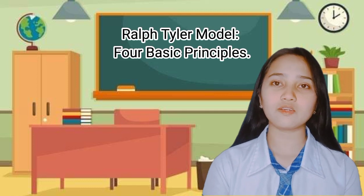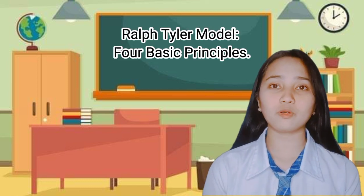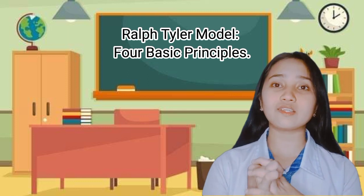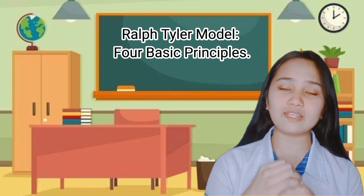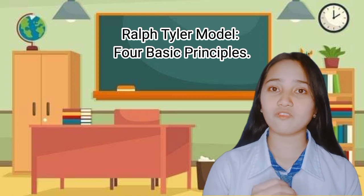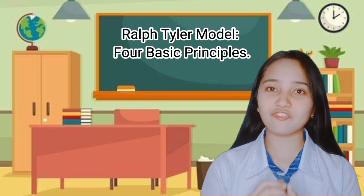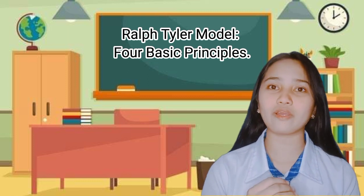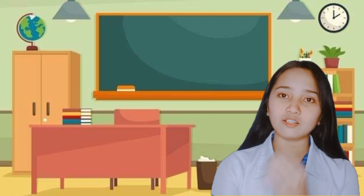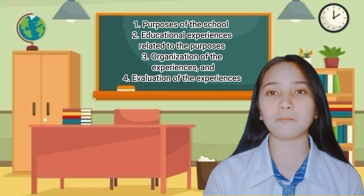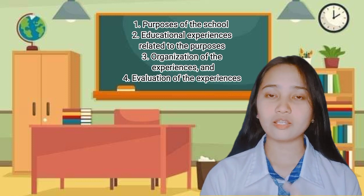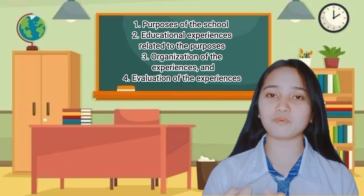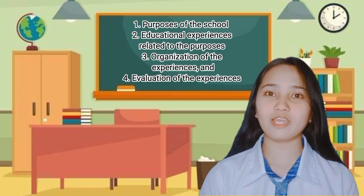Ralph Tyler's Model has four basic principles. Number one: what educational purposes should the school seek to attain? Number two: what educational experiences can be provided that are likely to attain these purposes? Number three: how can these educational experiences be effectively organized? And last: how can we determine whether these purposes are being attained or not? In summary, Tyler's model shows that in curriculum development, the following considerations should be made: purposes of the school, educational experiences related to the purposes, organization of the experiences, and evaluation of the experiences.